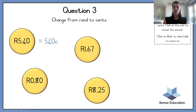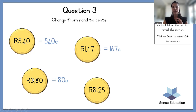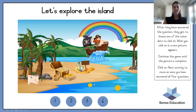Move the comma two spaces to the right and it's going to make 167 cents. Then over here, you're going to move it this way — and this time it's only going to make 80 cents, because we lose the zero in the beginning. Move the comma forward and — 825 cents. Good job! Let's go back to the island — it's a dolphin. Beautiful.